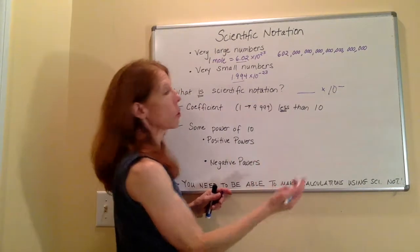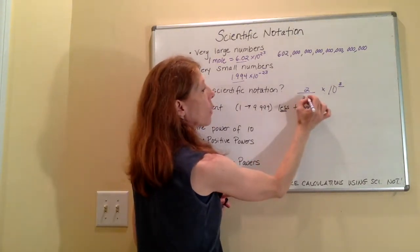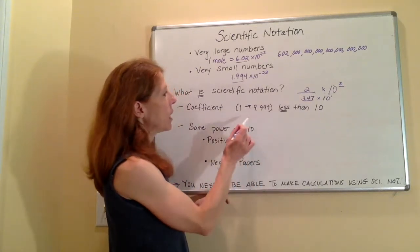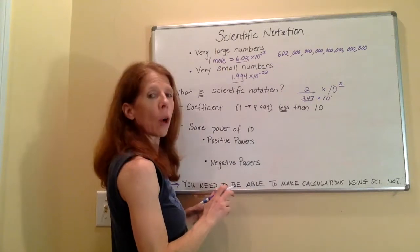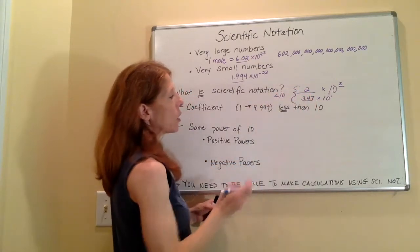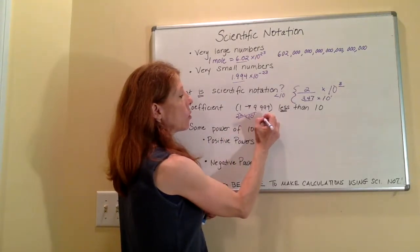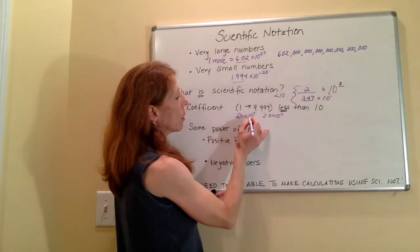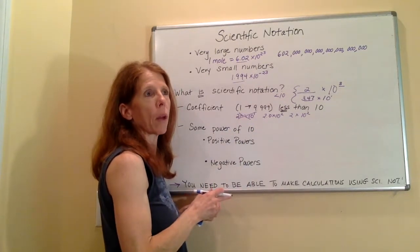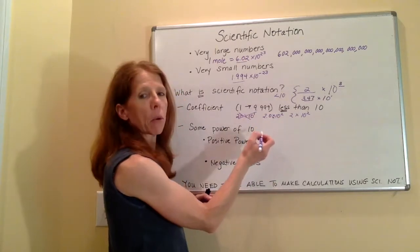Now we can also have coefficients that are whole numbers. We can have 2 times 10 cubed. This is the coefficient. We could have 3.47 times 10 to the first. That's also the coefficient. But the coefficient has to be a number that is between 1 and 9.9999. Now what that means is that this has to be less than 10. So the number 20 times 10 to the first is not a correct representation of scientific notation. What we could write is 2.0 times 10 squared. Or 2 times 10 squared. And whether you have zeros after that or not has to do with significant figures, which we'll get into in yet another video. But just understand that the coefficient, the number before this times sign, has to be a number that is less than 10.